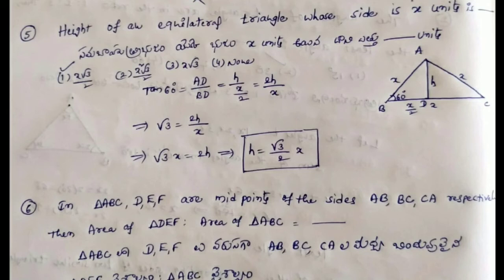If you also need the area, it is half into base into height, which is root 3 by 2 into x into x by 2, giving root 3 by 4 times x squared.